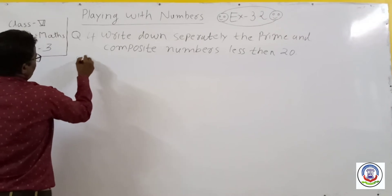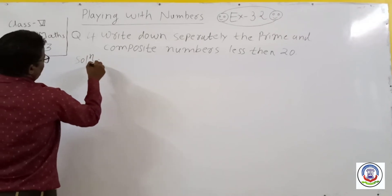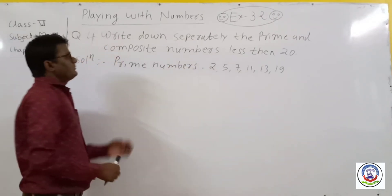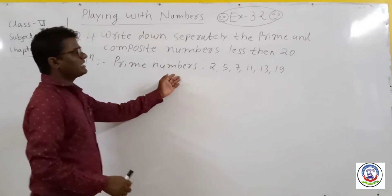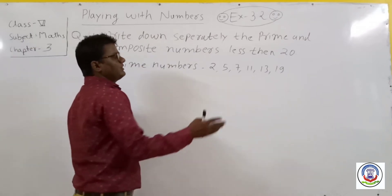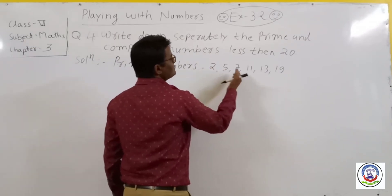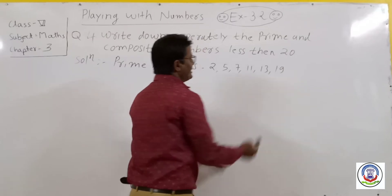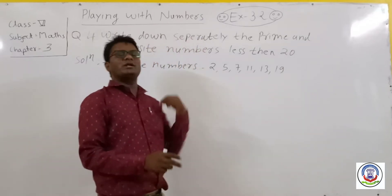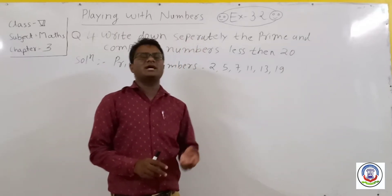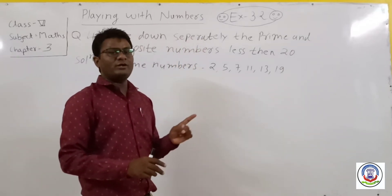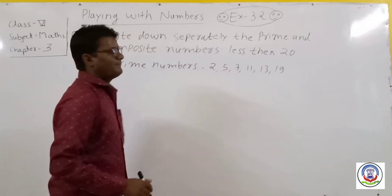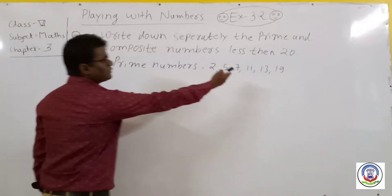For prime numbers less than 20, these will be: 2, 3, 5, 7, 11, 13. These are the numbers which have only two factors — one and the number itself — so they are called prime numbers and are less than 20.